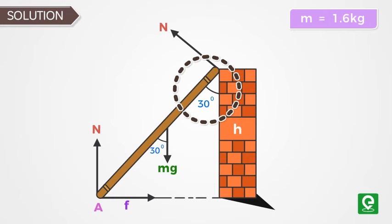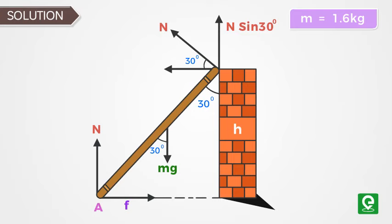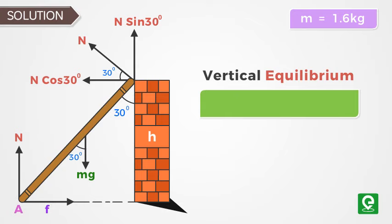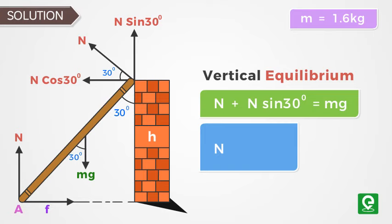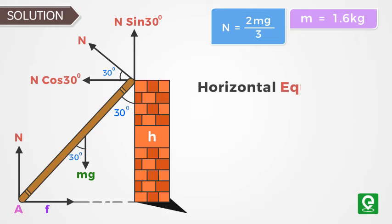Now the vertical component of reaction force N sin 30 degrees will act in the y-axis, and the horizontal component N cos 30 degrees will be in minus x-axis. By vertical equilibrium: N plus N sin 30 degrees equals mg. This implies normal reaction N equals 2mg by 3.